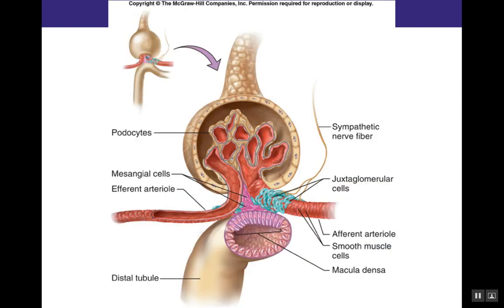Before discussing the renin-angiotensin-aldosterone system, let's review the anatomy of the glomerulus. Juxtaglomerular cells are very closely associated with the afferent arterioles. These juxtaglomerular cells release the enzyme renin, which is the first part of the pathway. Renin converts angiotensinogen to angiotensin I. It's important to know where these juxtaglomerular cells are in relation to the glomerulus and the distal tubule.